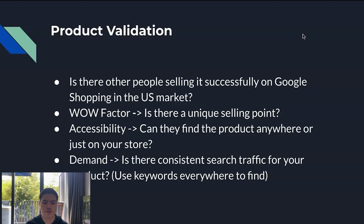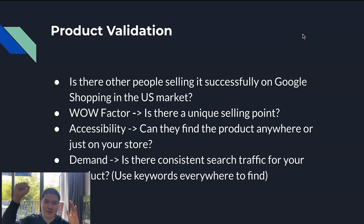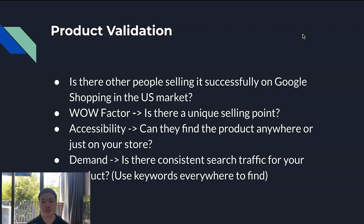The last and extremely important validation point: is there consistent search traffic for the product? This is critical because with Google, people can only find your product if they search for it. Unlike Facebook Ads where you can create artificial demand, Google is more like people walking into your retail shop — it's limited by how many people are actually searching. Ideally, find a product with high search volume — I highly recommend at least 100,000 searches per month in the US. A tool you should use for this is Keywords Everywhere.